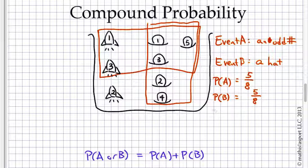So let's try our formula. The probability of either of those happening, A or B. According to our formula, it should be five-eighths plus five-eighths. Okay, we've got a problem. Because that equals ten-eighths, and ten-eighths is too big. It's not an allowed probability. It's bigger than a hundred percent. So something is wrong.